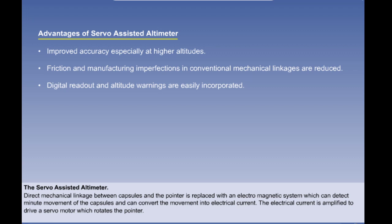To recap, the advantages of the servo-assisted altimeter are that it gives improved accuracy particularly at higher altitudes. Additional advantages are that friction and manufacturing imperfections in the mechanical gearing of a conventional altimeter are reduced, and altitude sensing in electrical form is available as a central source of information for digital readouts and systems such as autopilot, flight data recorder and altitude warnings.